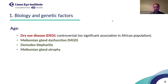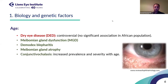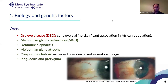Demodex blepharitis is a specific form of blepharitis where you can see the mites or nits on the eyelashes, and this form is significantly associated with increasing age. Meibomian gland atrophy is also associated with age, with higher risk as age increases. Conjunctivochalasis is a loosening of the conjunctival tissue, and most studies have shown increased prevalence and severity with age. Pinguecula and pterygium — because of ultraviolet impact — almost all studies have shown increased incidence with increasing age.